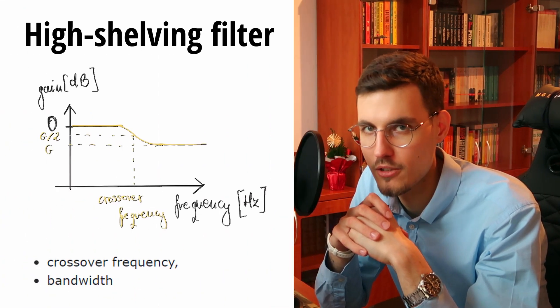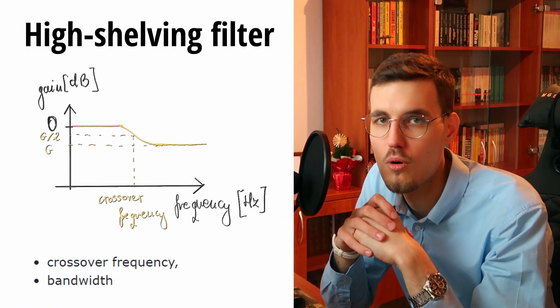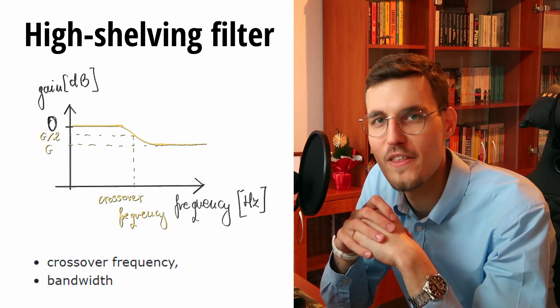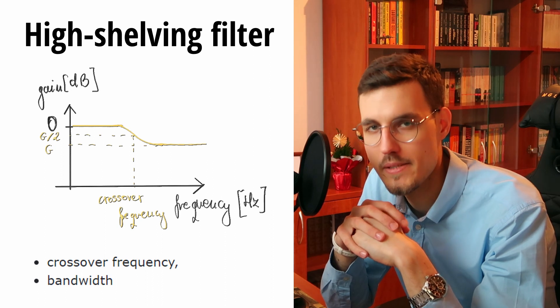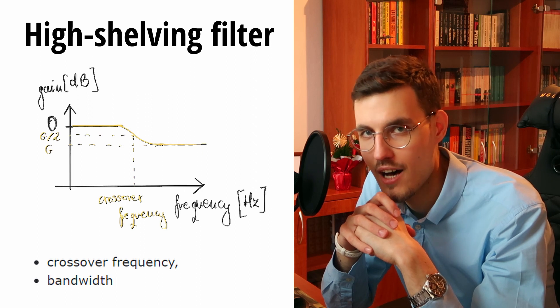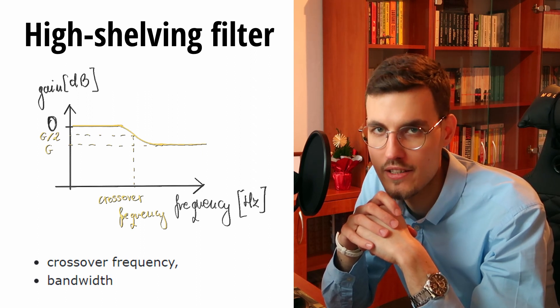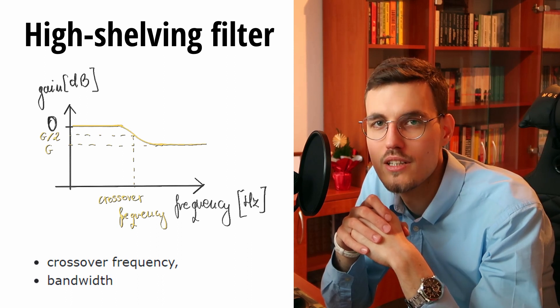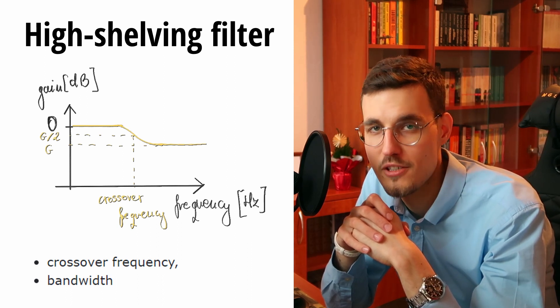Milder versions of the low-pass and high-pass filters are high-shelving and low-shelving filters respectively. A high-shelving filter lets us boost or attenuate frequencies above the crossover frequency. The crossover frequency specifies the frequency for which the filter's gain is exactly half of the shelf gain given in decibels. It may also be called the corner, cutoff, or transition frequency.